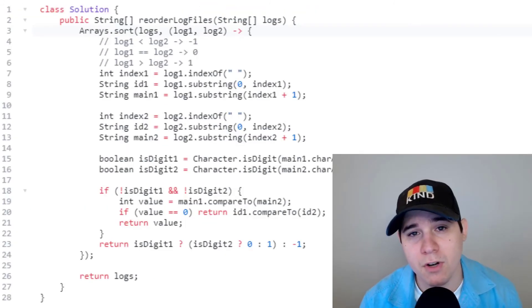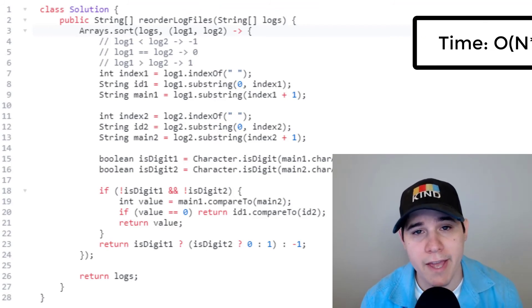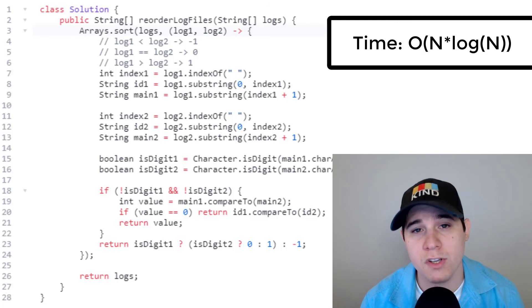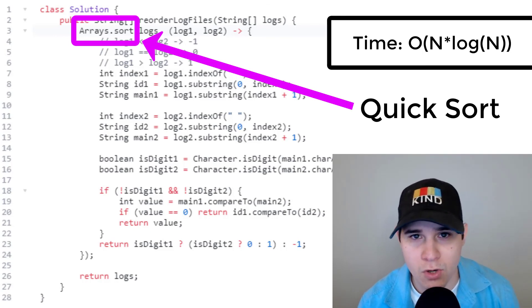So the time complexity of our solution is going to be big O of N times log of N, where N is the number of logs that we have inside of our input array. Under the hood, arrays.sort in Java utilizes a dual pivot quicksort algorithm. And this is specific to primitives. So because we are sorting by strings, it uses quicksort and quicksort on average will be N times log of N.